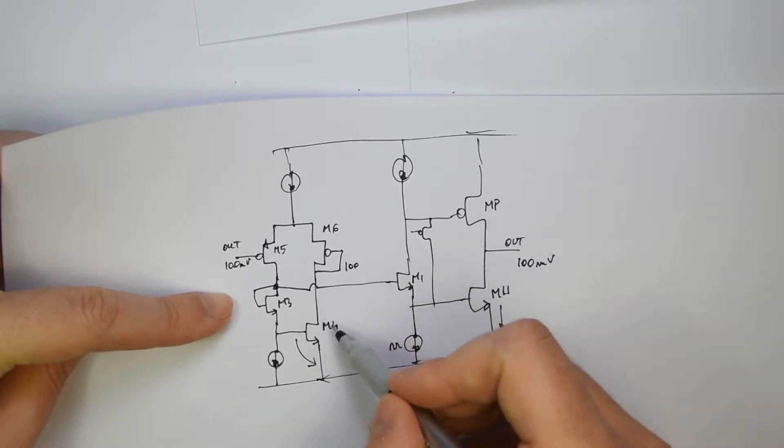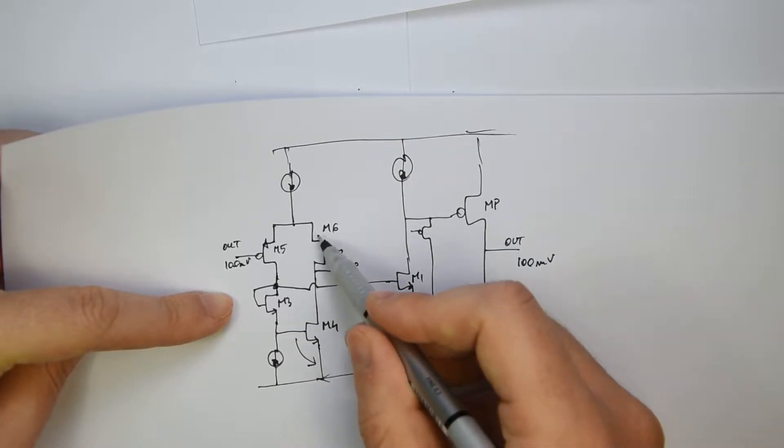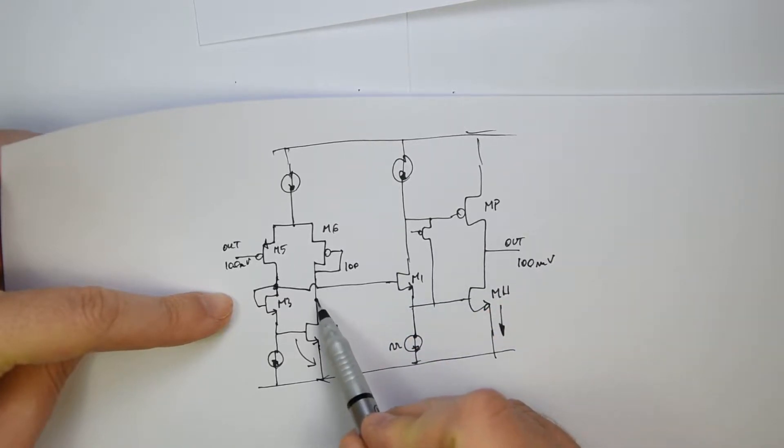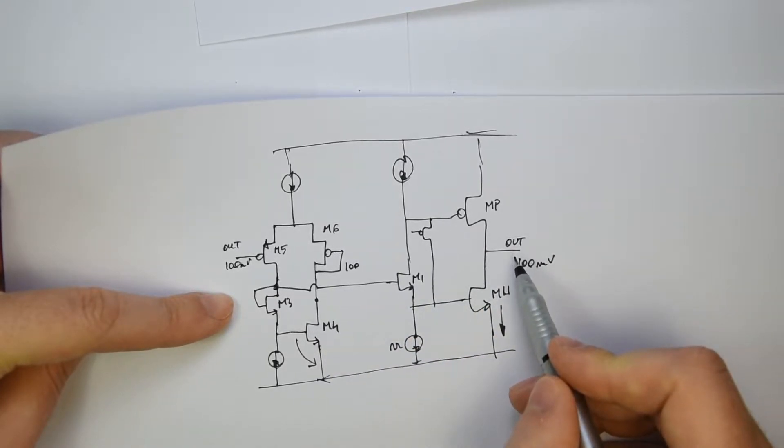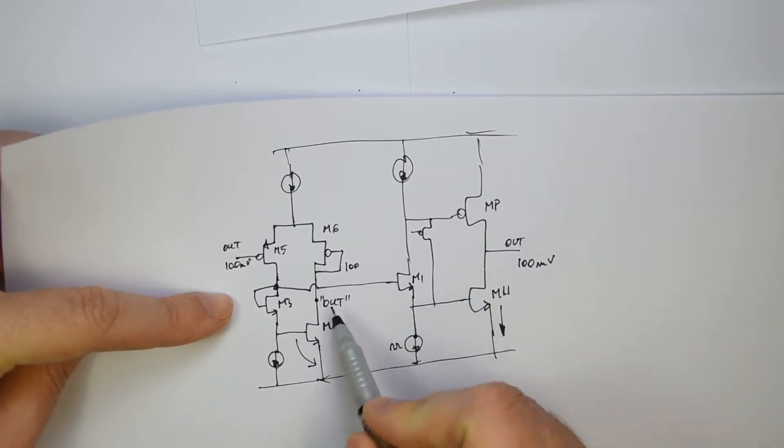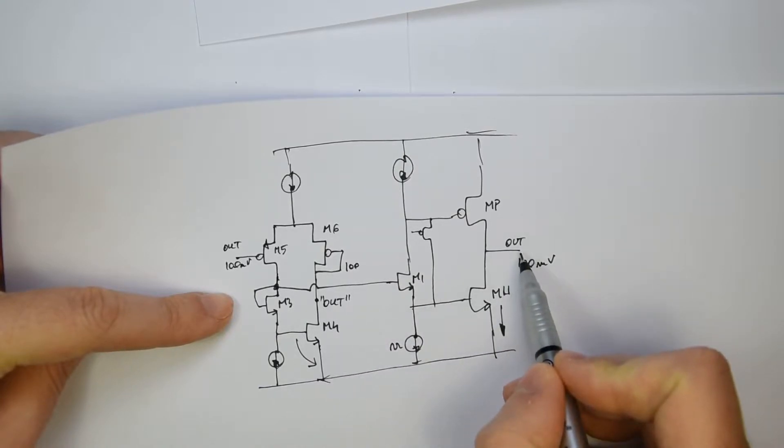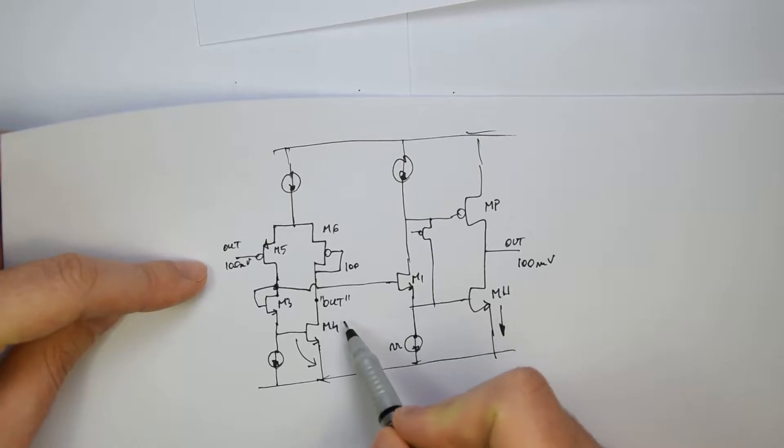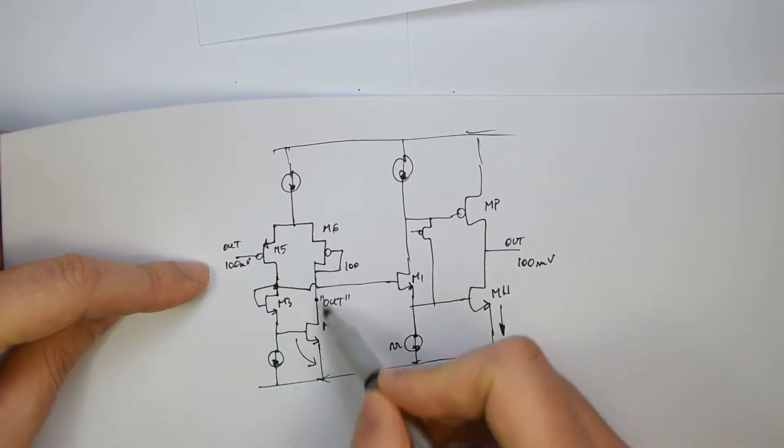But there is no current through this part. So this net, which we said, yeah, this net should follow the out. This is out clone. Let's put here like that, the apostrophe. This clone of the output voltage will not be the same, will not be correct. Simply because this structure is not working anymore.